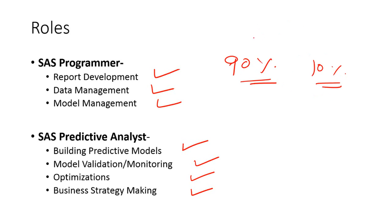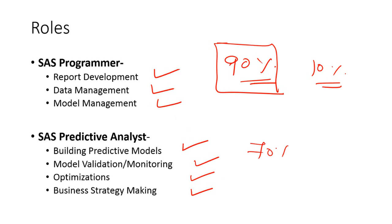I was a Programmer at one point of time, so that's what my experience has been. It could be different though, so I could be proved wrong. But as an analyst, 70% of work will be doing analysis and 30% or 40% will be doing programming. That's the basic difference between the two different roles.